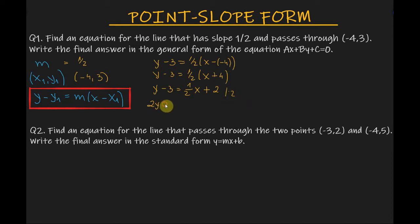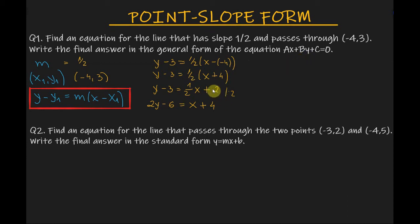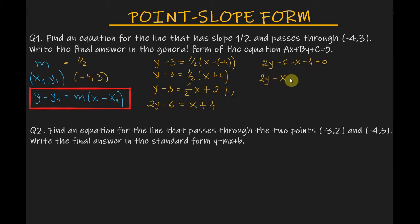So we have 2y minus 6 equals x plus 4. Now the question asked us to write the equation in general form, so we transfer everything to the left side: 2y minus 6 minus x minus 4 equals 0, which gives us 2y minus x minus 10 equals 0.